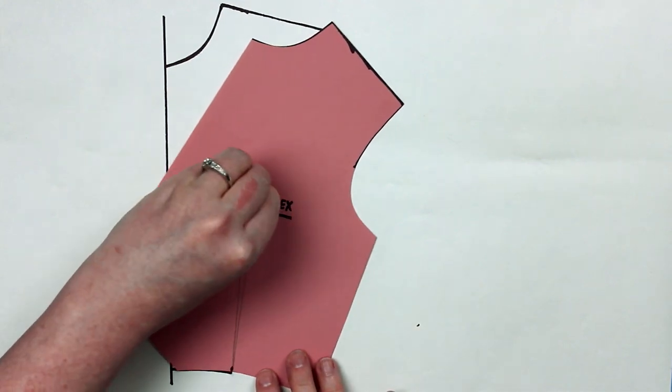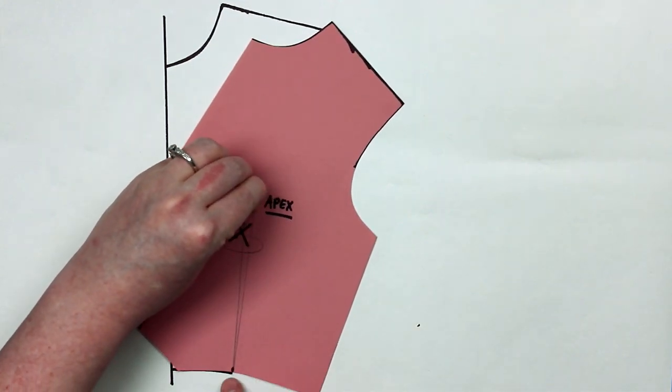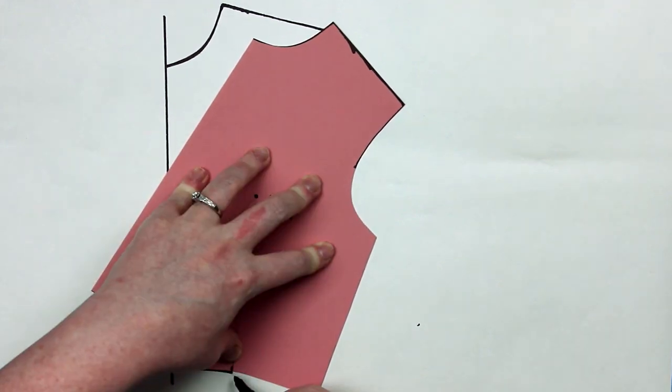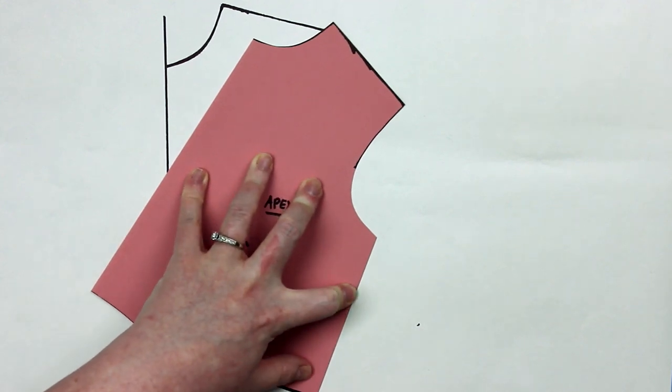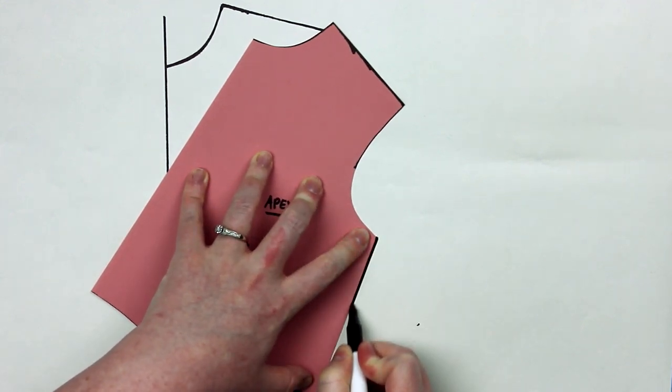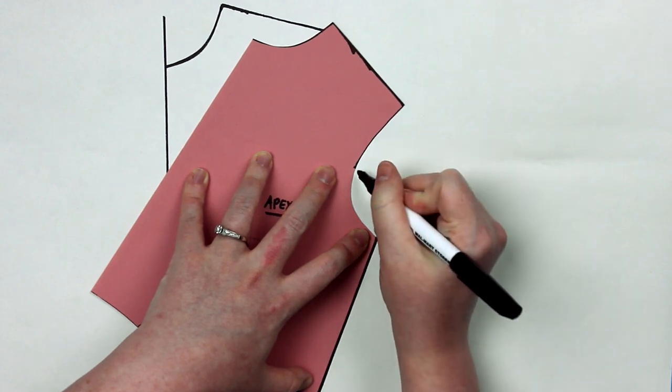From here you can continue the line that we first started on our fresh sheet of paper, and you're going to continue that all the way around the rest of our waistline, our side seam, up until the point of where we wanted our new dart to be.